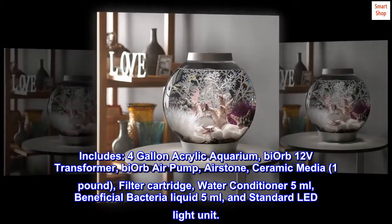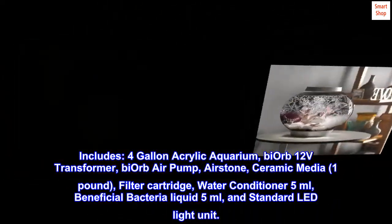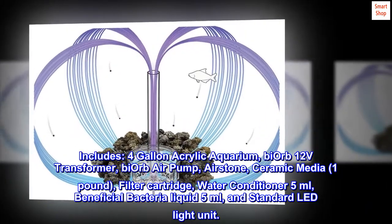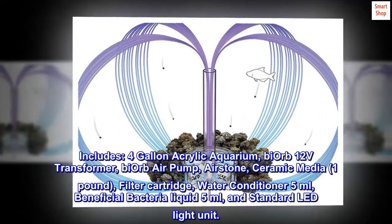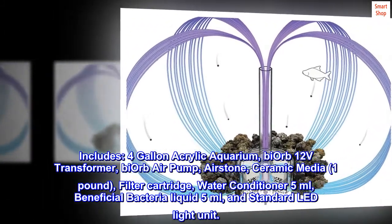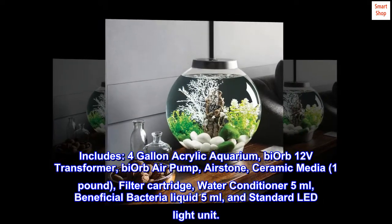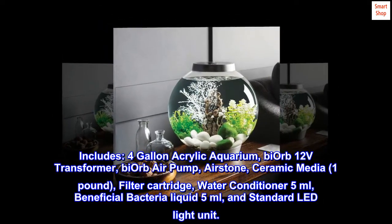Includes 4-gallon acrylic aquarium, bi-orb 12 volts transformer, bi-orb air pump, air stone, ceramic media 1 pound, filter cartridge, water conditioner 5 milliliters, beneficial bacteria liquid 5 milliliters, and standard LED light unit.